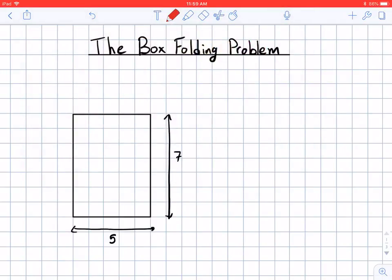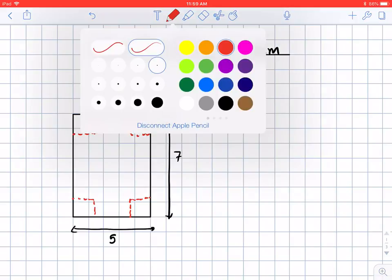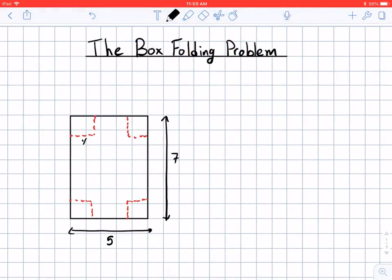So let me draw what I mean here. I'm going to cut out the corners and they're all going to be the same size cuts. So I cut out these corners and let's say each of the corners is going to have a cut of size X. So these are all X by X cuts.